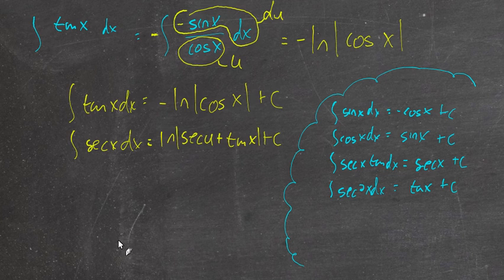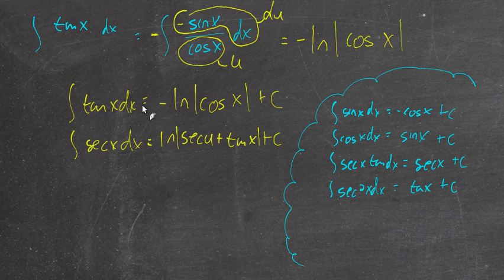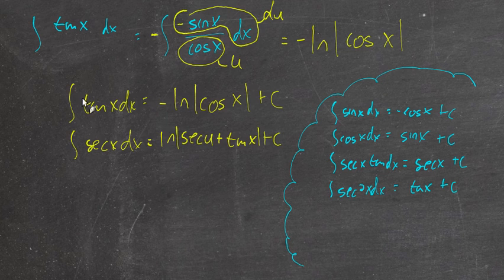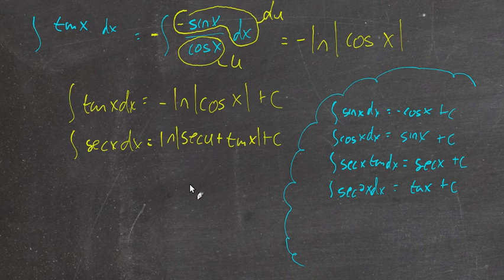Those are all given on page 337 if we want to reference them for homework. The log rules allow us to take anti-derivatives using the log rule — first, new kinds of anti-derivatives of the form du over u, and also, as a lucky result, we get to take the anti-derivative of all of the trig functions: sine, cosine, cosecant, secant, tangent, cotangent. We'll cover some examples in the sample problems video. If you have any questions, get in contact with me. Thanks for watching.